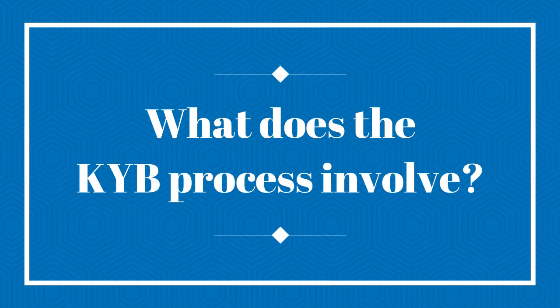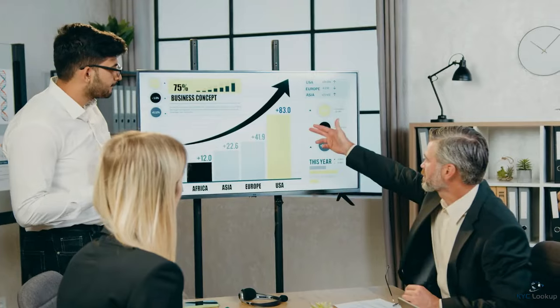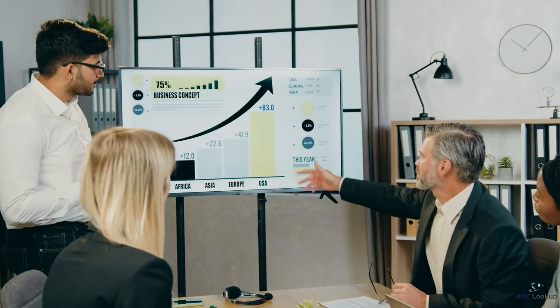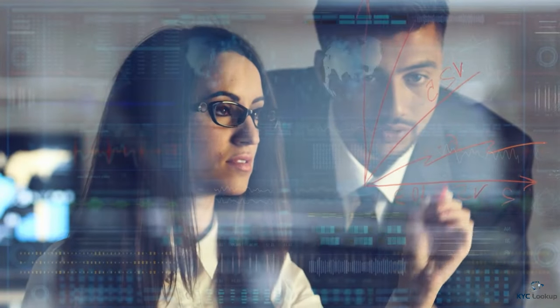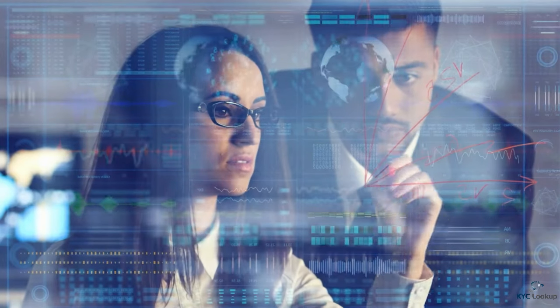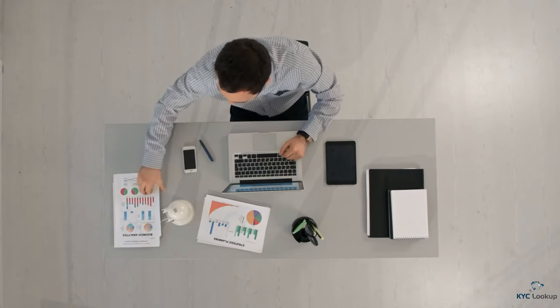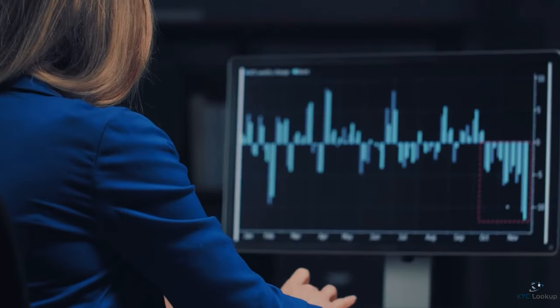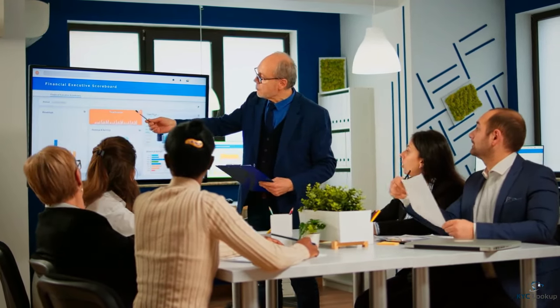What does a KYB process involve? The KYB Know Your Business process involves gathering and verifying information about a corporate entity to understand their ownership structure, business activities, financial health, and associated risks.